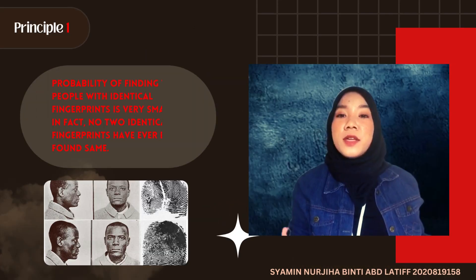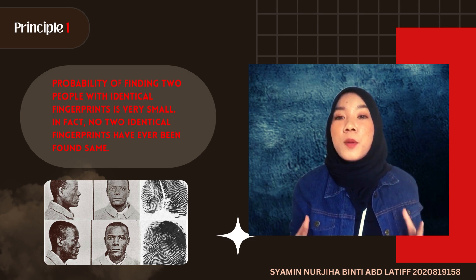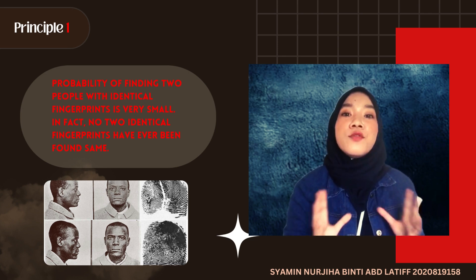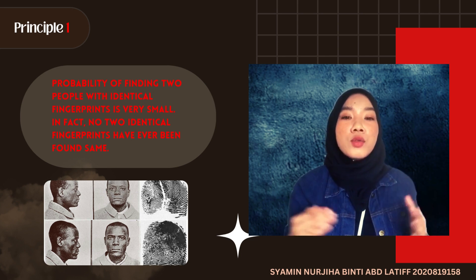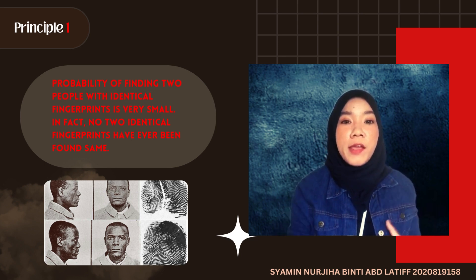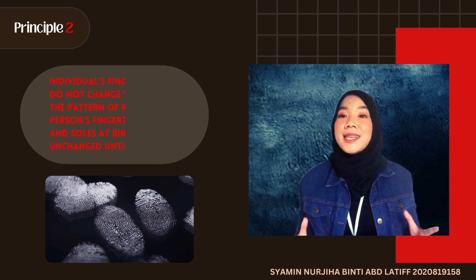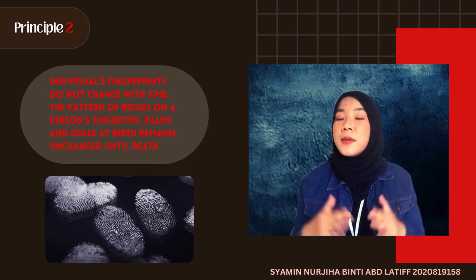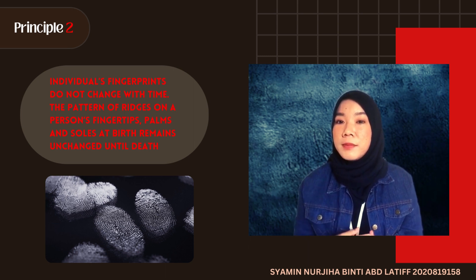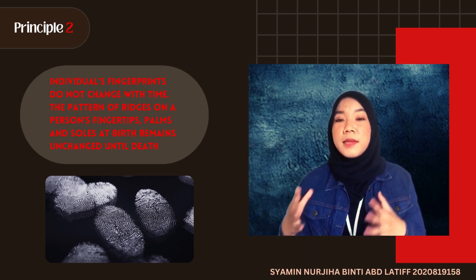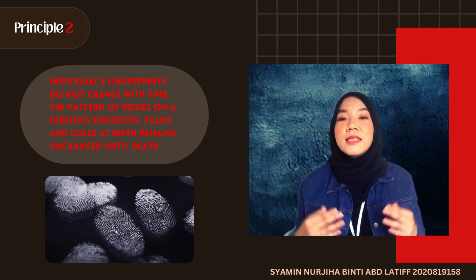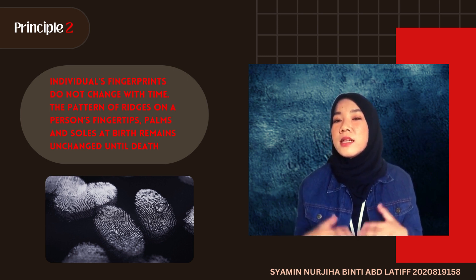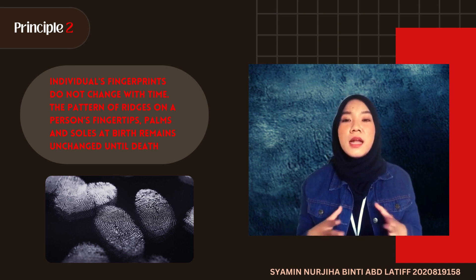The first fundamental principle is that the probability of finding two individuals with identical fingerprints is very small. In fact, no two identical fingerprints have ever been found. The second principle is that individual fingerprints do not change with time — the pattern of ridges on a person's fingertips at birth remains the same until death. Consequently, a detective can be certain that a criminal's fingerprint will remain unchanged until death.